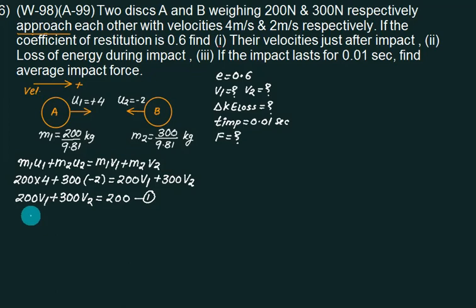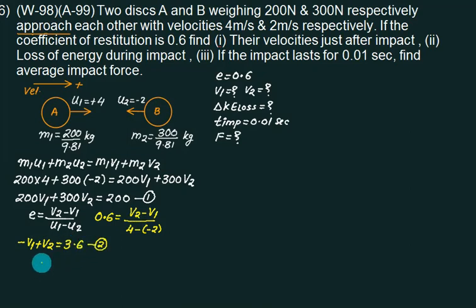Second is coefficient of restitution. Velocity of approach is what? V2 minus V1 upon U1 minus U2. What is the coefficient of restitution given to you? 0.6. V2 minus V1. U1 is 4. This is minus and minus. So what is minus V1 plus V2? This one is 6 and 6, 3.6. So is V1 come out to be minus 1.76 and V2 come out to be 1.84.